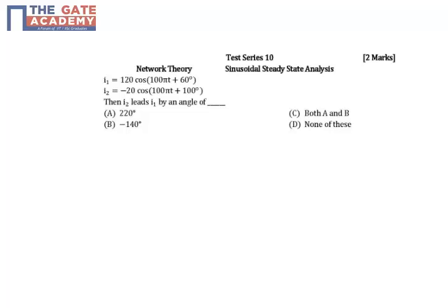Now i1 is given as 120 cos 100 pi t plus 60 degrees. I2 is also a cosine function but if you observe keenly there is a negative sign. So what we need to do is we have to eliminate this negative sign.